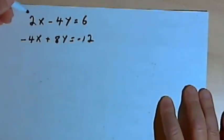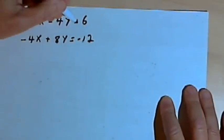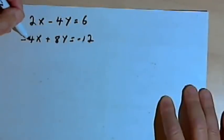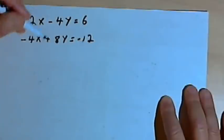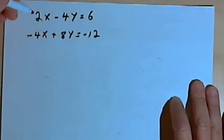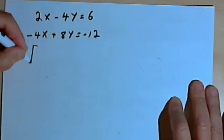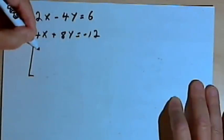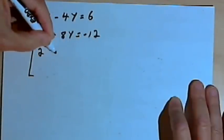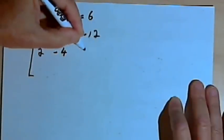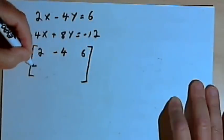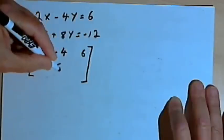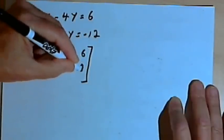Let's start with this system of equations: 2x minus 4y equals 6, and negative 4x plus 8y equals negative 12. Let's try solving this with an augmented matrix. I'll turn this into the matrix with first row 2, negative 4, 6, and second row negative 4, 8, negative 12.